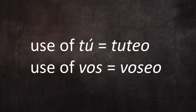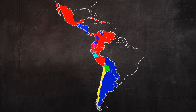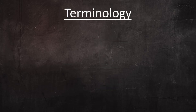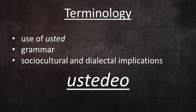In previous videos I've referred to the use of tú as tuteo and the use of vos as voseo. The terms tuteo and voseo don't just refer to the pronouns themselves, but to the grammatical forms that accompany each pronoun, as well as the sociocultural and dialectal implications of using one versus the other. In a similar fashion, the use of the pronoun usted, its accompanying grammar, and the sociocultural and dialectal implications is called ustedeo.